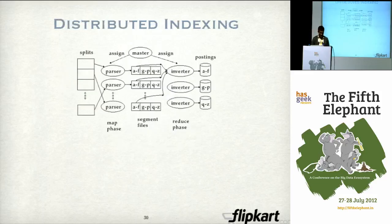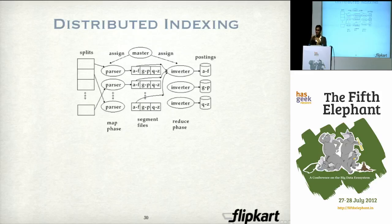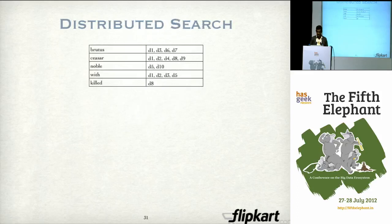Something you can see from this approach is that it is obviously distributable — you can easily put it in a MapReduce paradigm. The mapper takes splits of documents and does the parsing and tokenization, converts them into term-document ID pairs, and creates a local posting file for that set of documents. Then the reducer actually does the merging of these posting files.